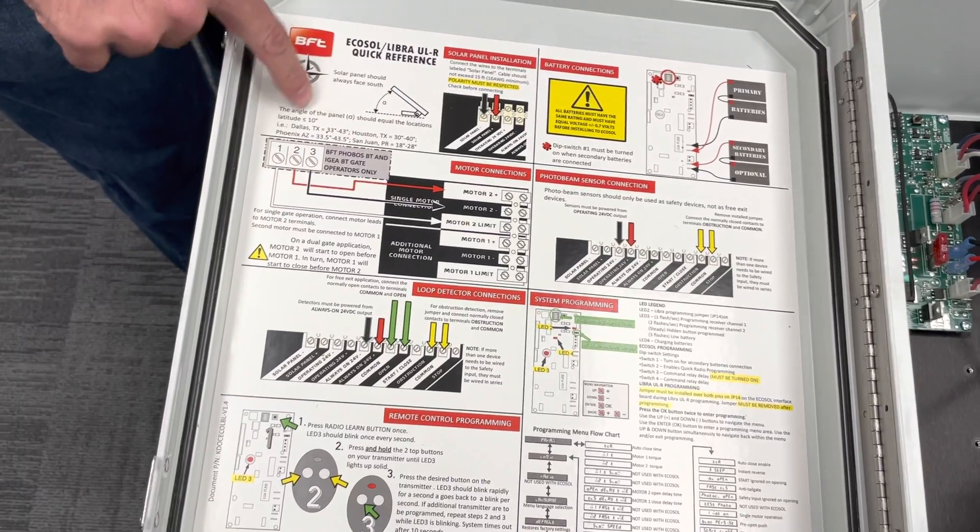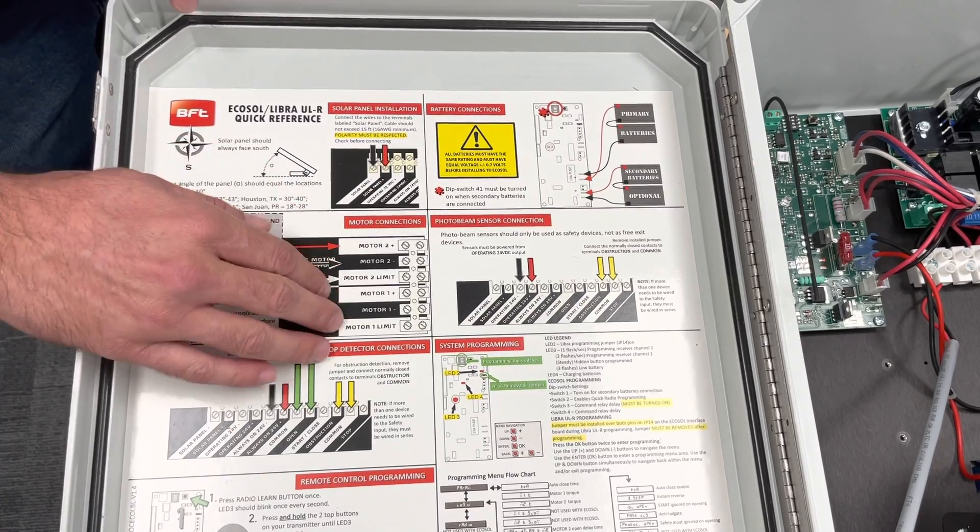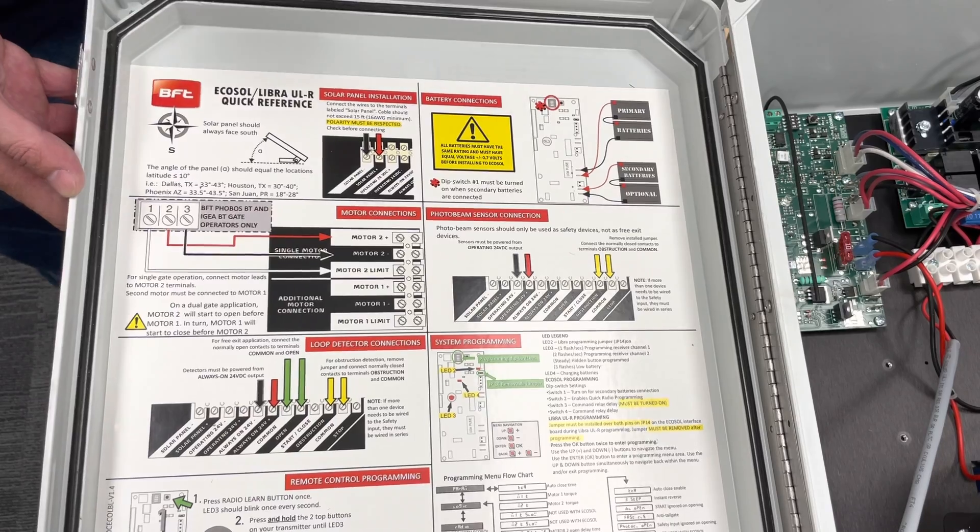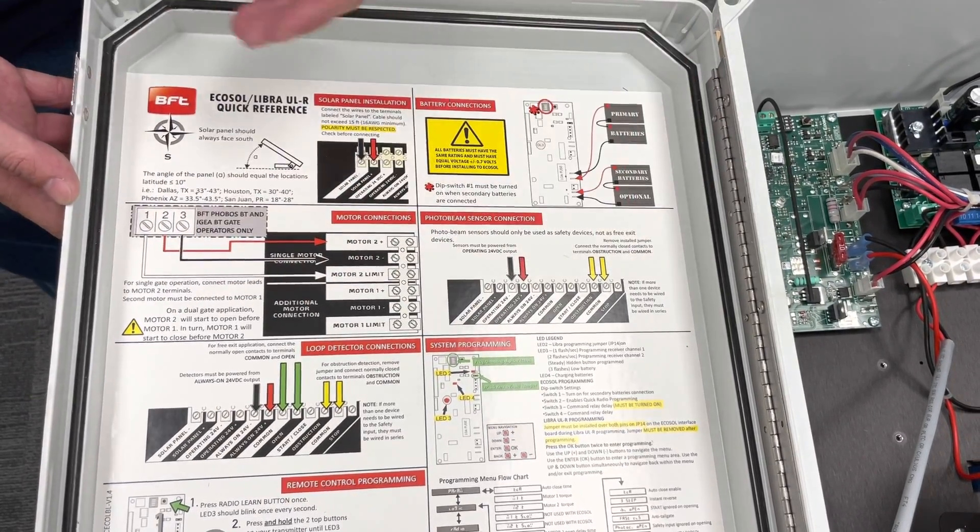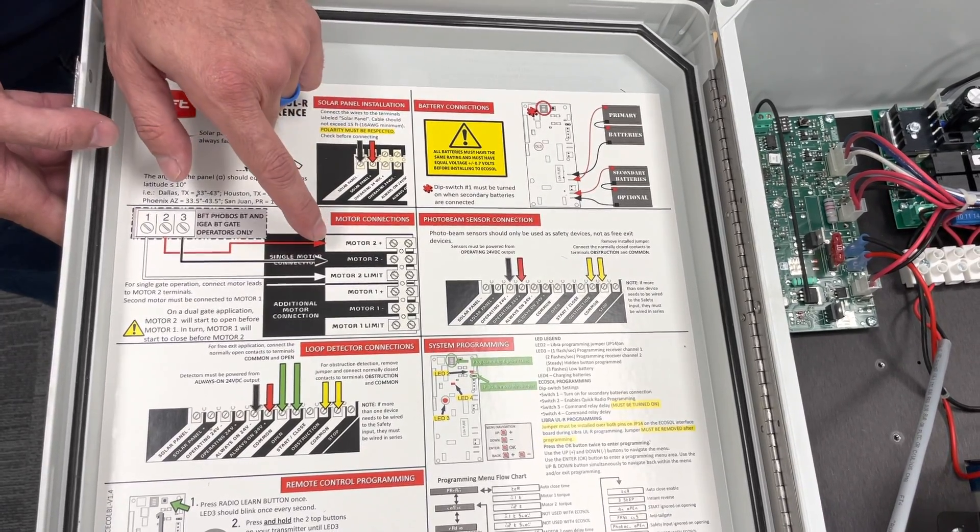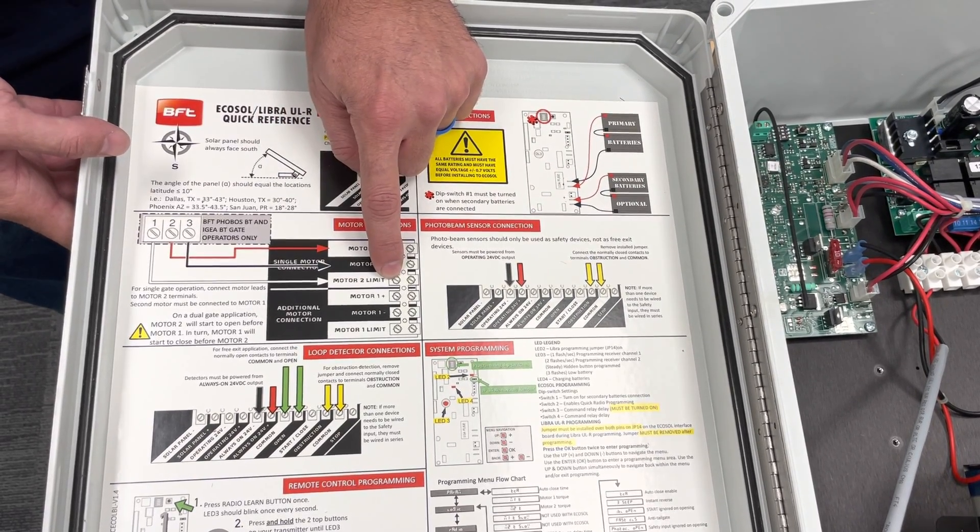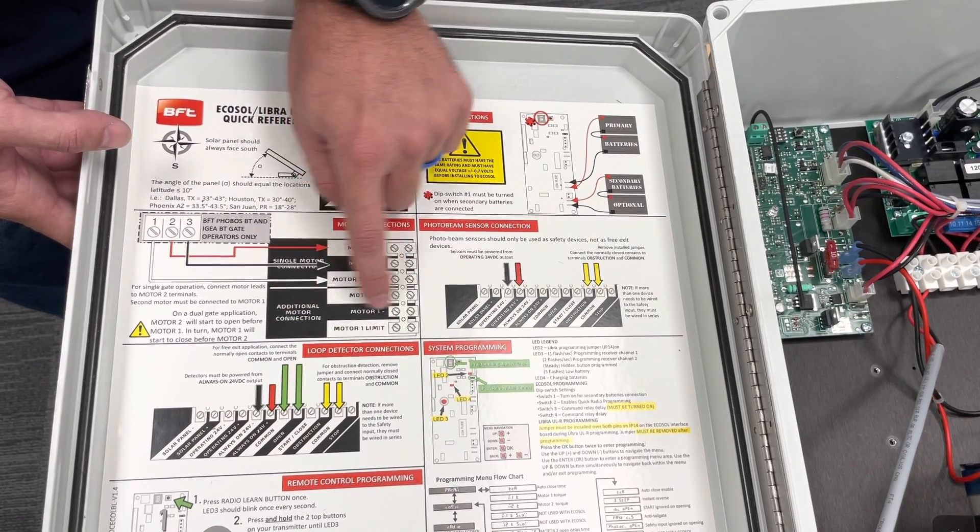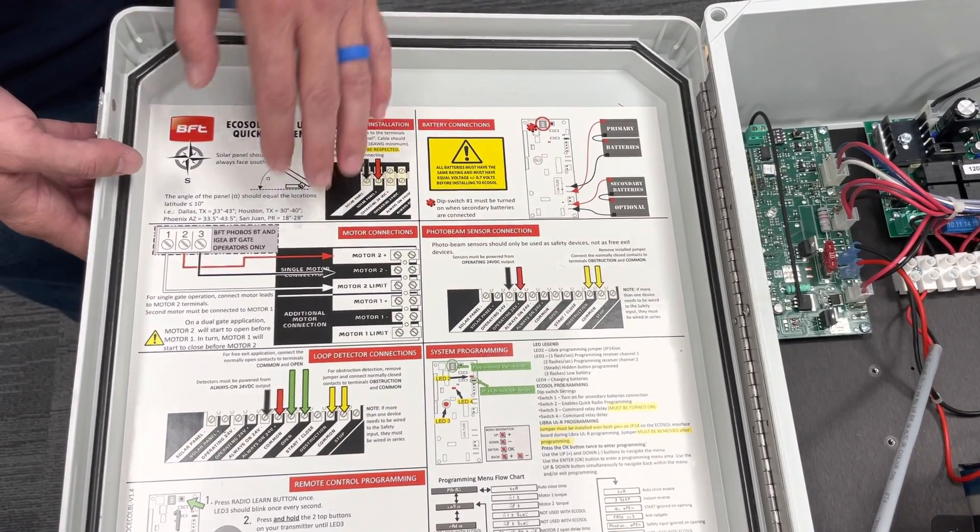The reason I want to go over this label is because there's a few of them that made it out there that are actually for the Libra ULR. But don't fret, a lot of this information is still very pertinent. Like the angle of your solar panel. One of the main things I want to point out here is your motor two and motor one connections. Because the Libra board used to make the motor two the actual primary motor, that's why it's marked motor two. The new label is coming.